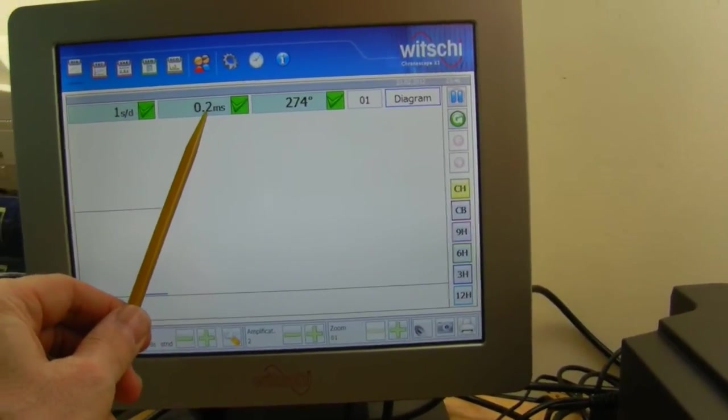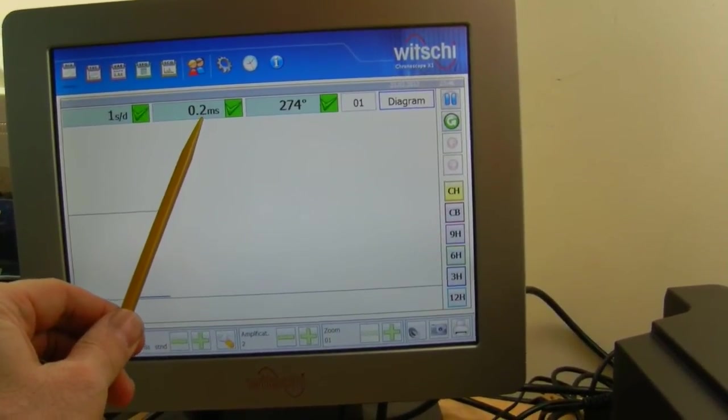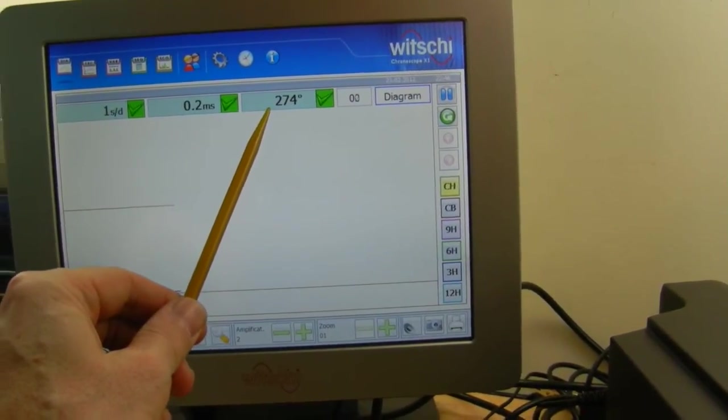This is showing the beat of the watch and I'll explain a bit more about that later. And this is showing the amplitude of the wristwatch balance.